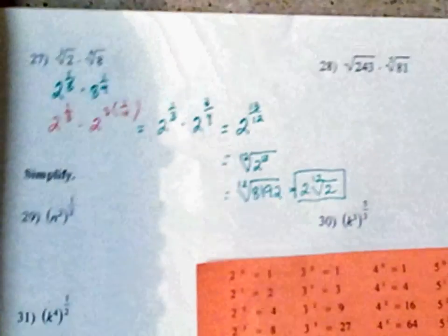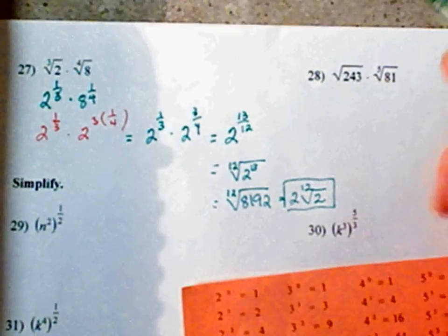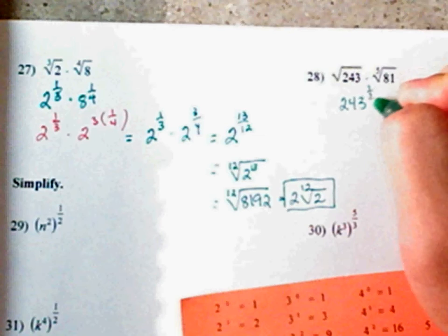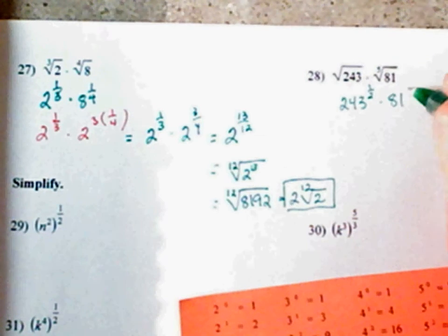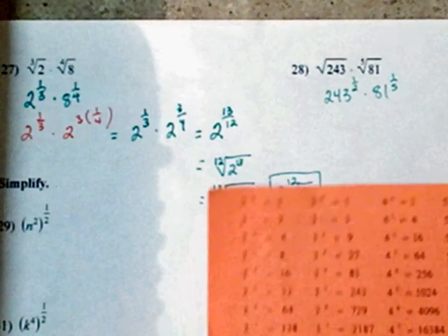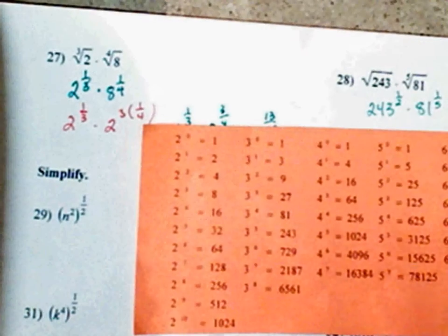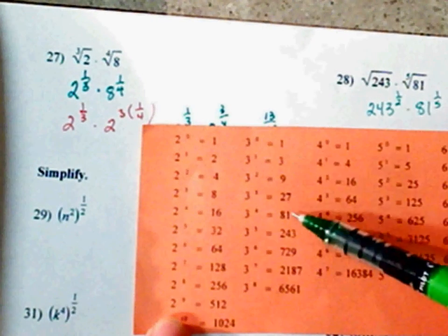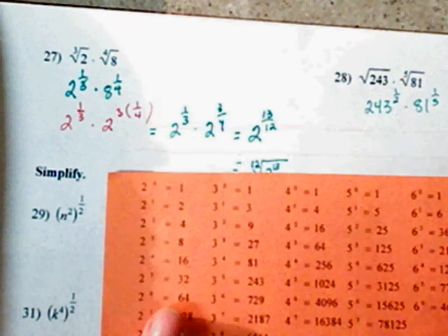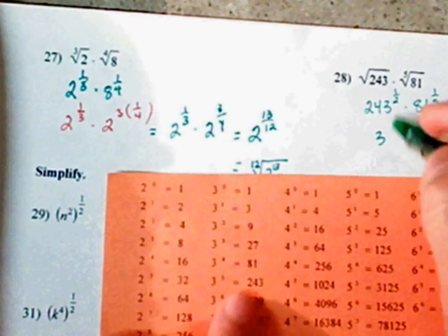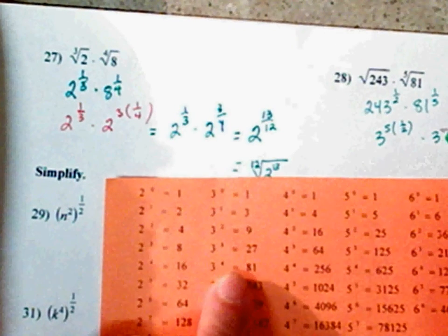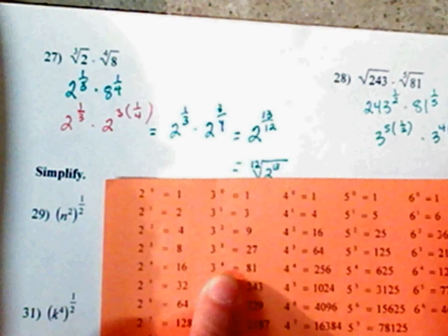Number 28. Roots are not the same. You can't multiply them. So let's rewrite this in exponential form. This is the same thing as 243 to the 1/2 times 81 to the 1/5. Look on your sheet. See which one has 243 and 81. The base of 3 has that. So we're going to rewrite this as 3 to the 5th. Bring down your 1/2 times 3 to the 4th. Bring down your 1/5.